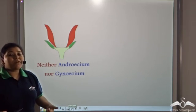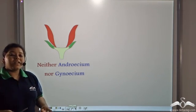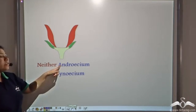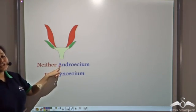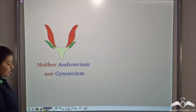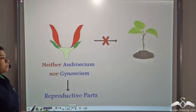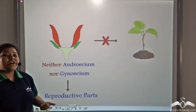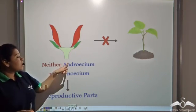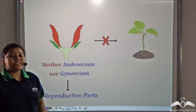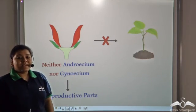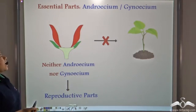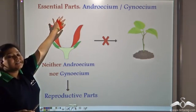Is it possible for a flower to survive or reproduce if there is no androsium or no gynecium? No, it is not possible, because these are the main reproductive parts of the plant. Without these parts, reproduction is not possible, and hence androsium and gynecium are known as the essential parts of a flower.